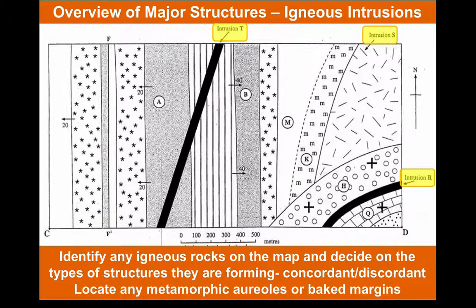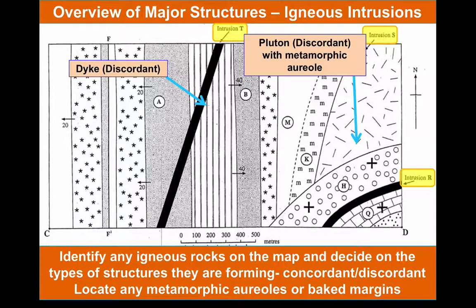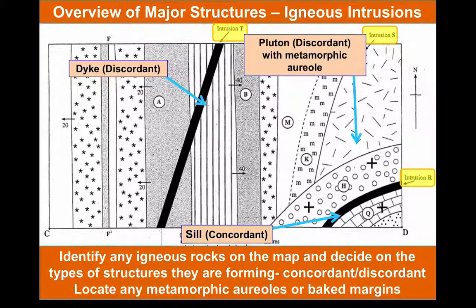On this particular map we've got three different intrusions marked, and we can work out what they are by looking at their outcrop patterns. We've got a large, irregular, discordant pluton with a metamorphic aureole around it — a very obvious feature. Intrusion T is a dyke: it's sheet-like and discordant with the country rock. Finally, intrusion R is concordant with the country rock and therefore is a sill. Be careful you don't mix up sills with lava flows — there will be some evidence in your exam if you need to differentiate between the two.